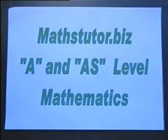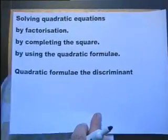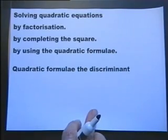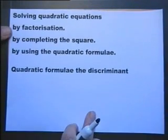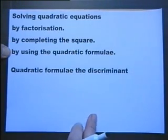A and AS level mathematics lesson five: some more algebra. On this one we're going to be looking at solving quadratic equations by method of factorization, by method of completing the square, and by method of using the quadratic formula.